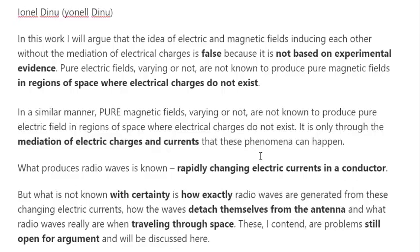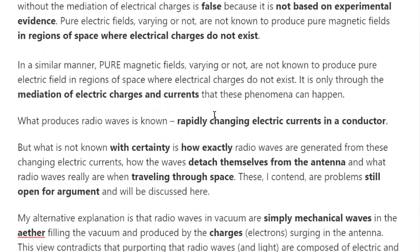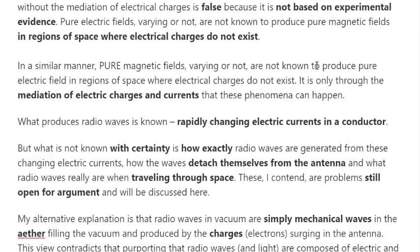For the most part I'm conveying what he says in the paper. He argues that the idea of electric and magnetic fields inducing each other without the mediation of electric charges is false, because there is no experimental evidence for it. Pure electric fields — varying or not — are not known to produce pure magnetic fields in regions of space where electrical charges do not exist.